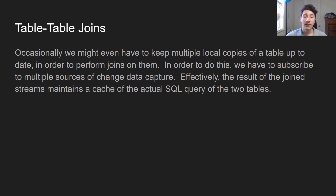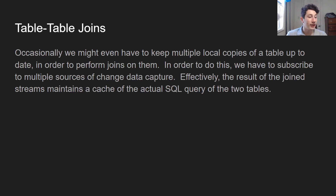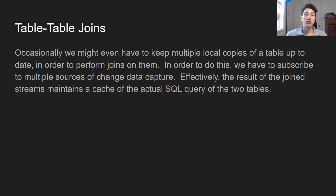Finally, we have table-table joins. This is basically saying imagine that we have two tables where every single time there's a change to them, we frequently want to go ahead and take the join of them and keep that join in a kind of cached way. Say we have a tweets and followers table and we want to see for each tweet which followers to send it out to. So every time there's a new tweet, we want to find all the followers for it. A table-table join can be done by basically having two subscribers for the change data capture of each table, and when that change data comes in, you go ahead and perform the join on local copies of a stream.